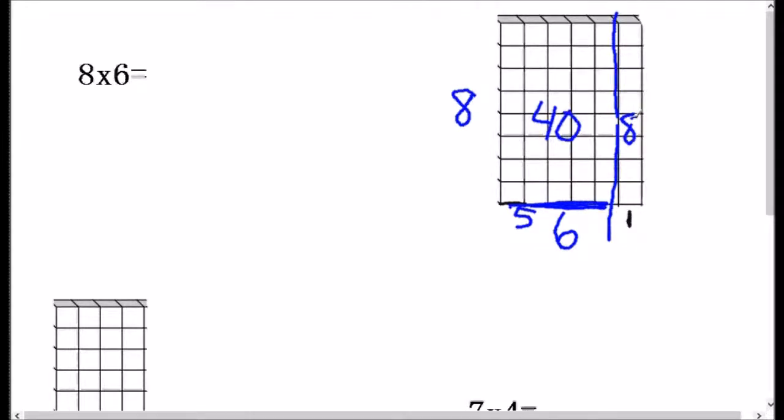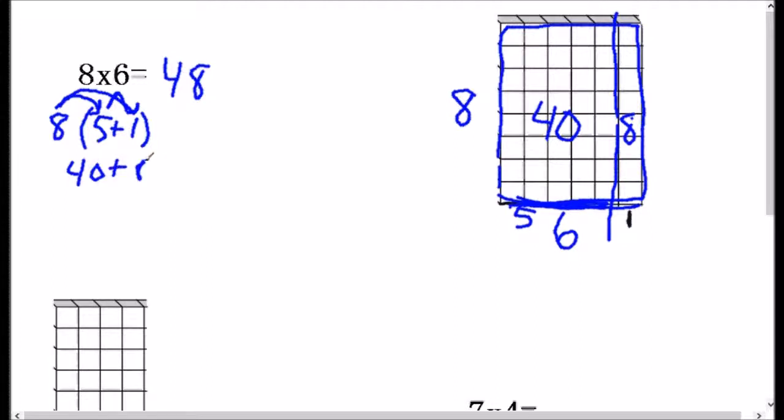And so total, this whole rectangle is worth 48. So 8 times 6, which is the whole length of that, is 48. So basically we broke that 6 up into 5 plus 1. And we multiplied each one of those pieces by 8. And that's what the distributive property is, is to multiply pieces. We are distributing over the addition, and that's how we got the 40 plus 8.